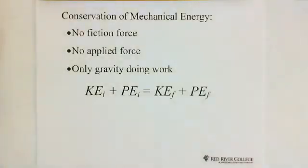When we apply conservation of mechanical energy, the conditions are: no friction force, that means in an ideal situation no friction or friction can be ignored, and no applied force, meaning no push and no pull. Only gravity doing work. That means the object position will change vertically, so gravity is doing work.